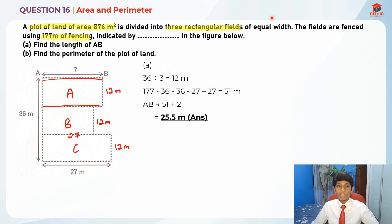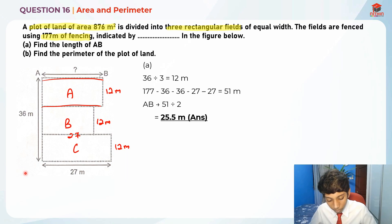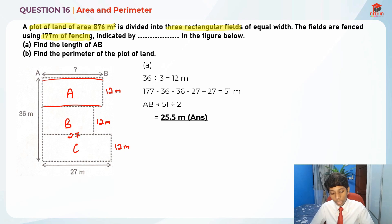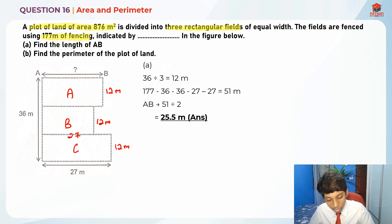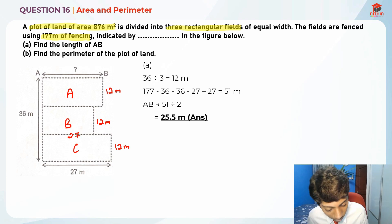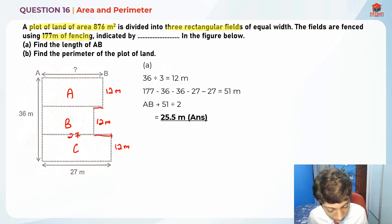Now let's move on to Part B. For Part B, they're asking us to find the perimeter of the plot of land. I've already shown you what the perimeter looks like. The only challenging part is finding the length of these two unlabeled sides.